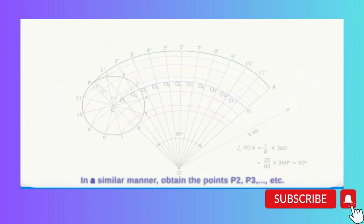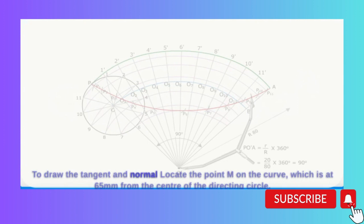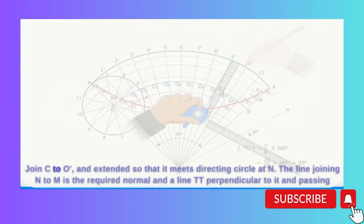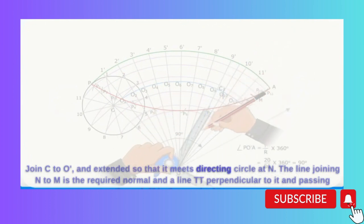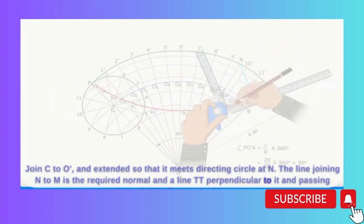In a similar manner, obtain the points P2, P3, etc. A smooth curve through these points is the required hypocycloid. To draw the tangent and normal, locate the point M on the curve which is at 65 mm from the center of the directing circle. With M as center and radius 20 mm, draw an arc intersecting the locus of the center of the generating circle at C. Join C to O' and extend so that it meets the directing circle at N. The line joining N to M is the required normal, and a line TT perpendicular to it and passing through M is the required tangent.